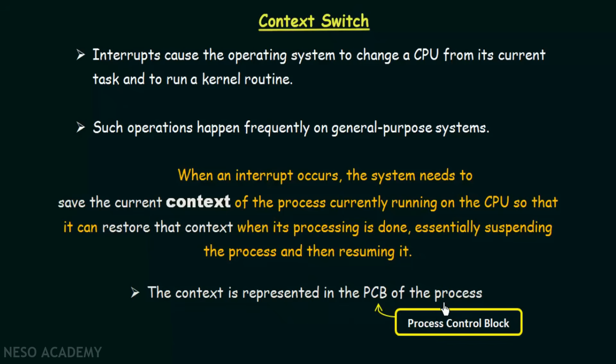The context is represented in the PCB — Process Control Block — which we studied in the previous lecture. All things in the PCB, like the state of the process, the memory, and the registers it is using, will be stored there. With the help of the PCB we can know the current context or current status of that particular process, so that when it is saved and we go execute another process and come back, we know from where to resume.